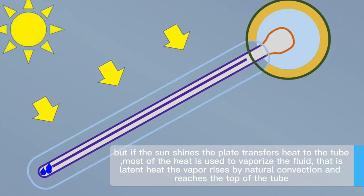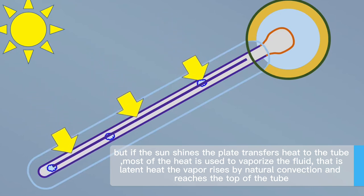But if the sun shines, the plate transfers heat to the tube. Most of the heat is used to vaporize the fluid, that is latent heat. The vapor rises by natural convection and reaches the top of the tube.